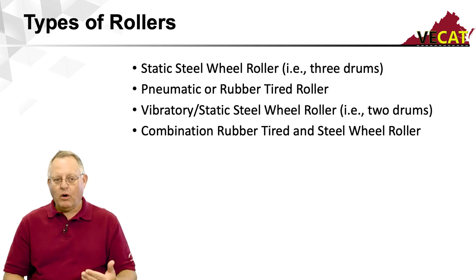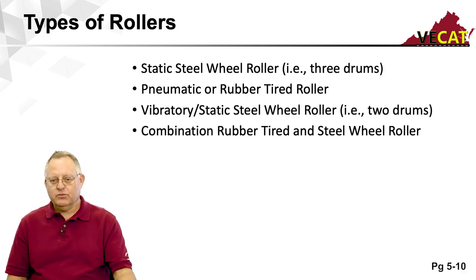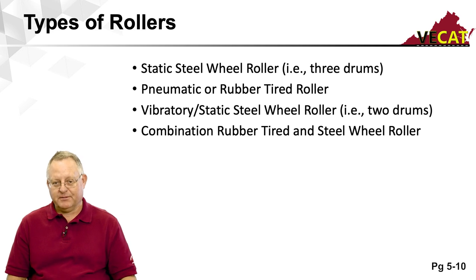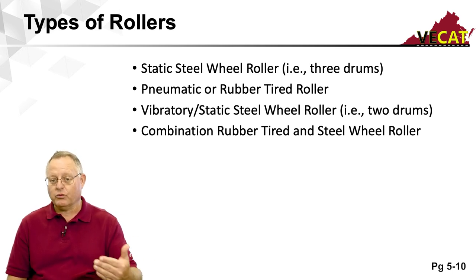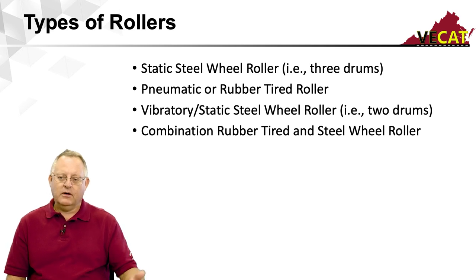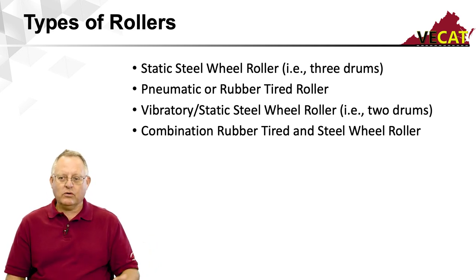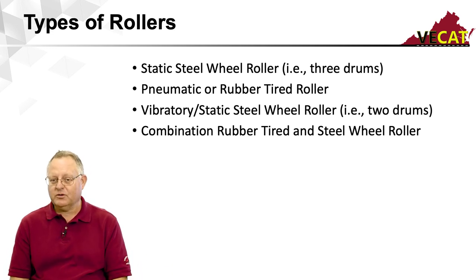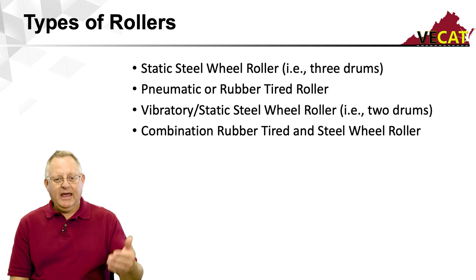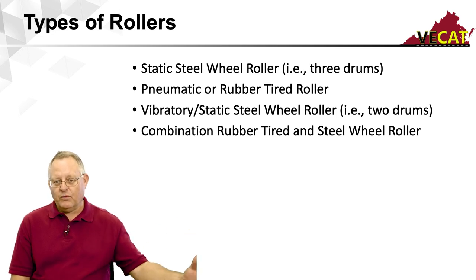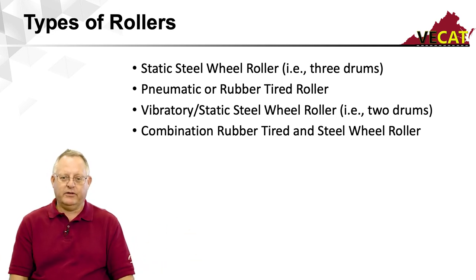What types of rollers do we have? We have static steel wheel rollers, typically three drums with no vibration. We have pneumatic or rubber tire rollers. We have static or vibratory drum rollers — one of the most common types used in Virginia. And there are combination rollers with rubber tires on one side and a steel wheel on the other.